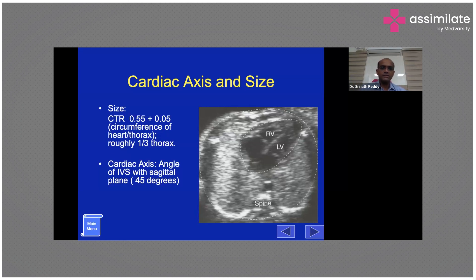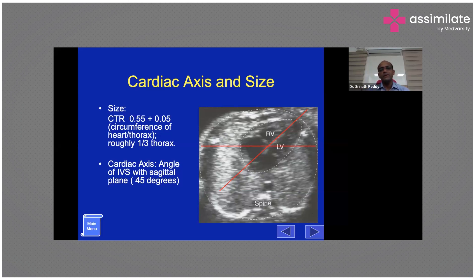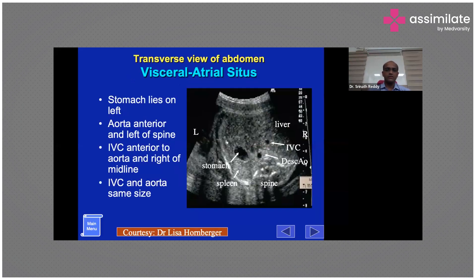The cardiac axis is also assessed. You draw a line along the long axis of the heart and a perpendicular line aligned with the body plane. The normal cardiac axis angle is about 45 degrees. If there is a tilt and the axis is increased — more than 60 to 70 degrees — there is an increased incidence of congenital heart disease, and you must look for that possibility.